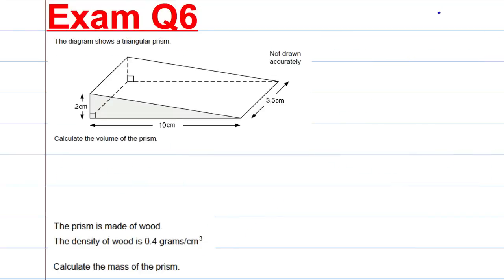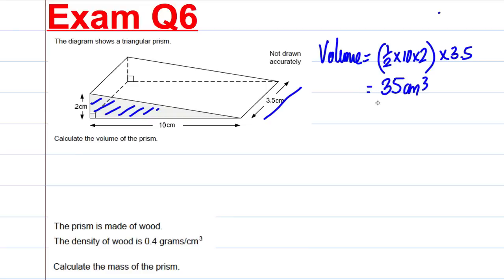And the last question here, the diagram shows a triangular prism. What's the volume? The volume of a prism is always equal to the area, shaded area, times the depth. So the area of this triangle is a half times 10 times 2, a half base times height. And we're going to multiply it by 3.5. So just tap that in your calculator. You would get yourself 35 centimetres cubed. That's the volume.